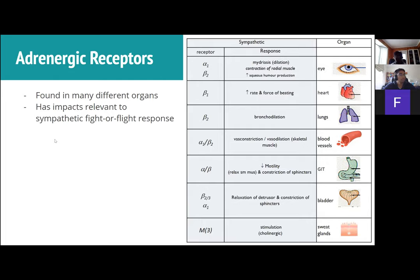For example, alpha-1 receptors promote dilation of the eye — which makes sense in a fight-or-flight situation where you want to see more. Beta-1 activation increases rate and force of beating of the heart, supplying more blood to skeletal muscles. Blood vessels have vasoconstriction or vasodilation, lungs have bronchodilation — reading through that list should make sense in a fight-or-flight context.